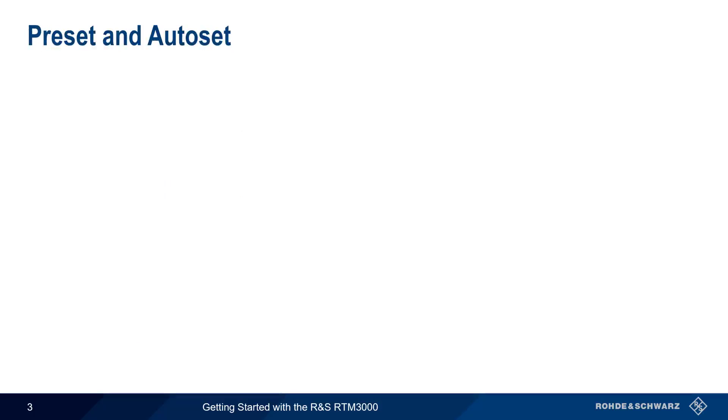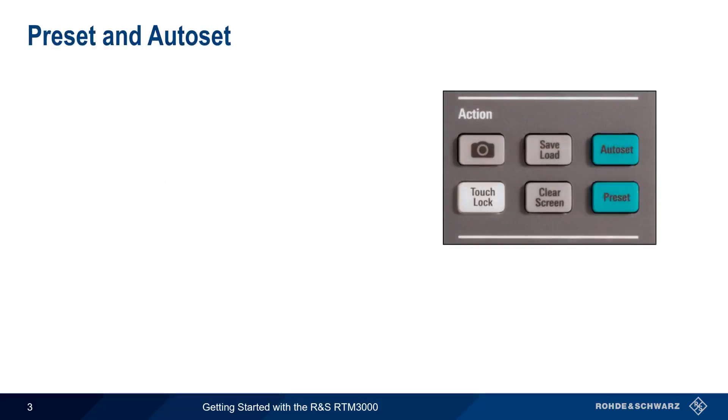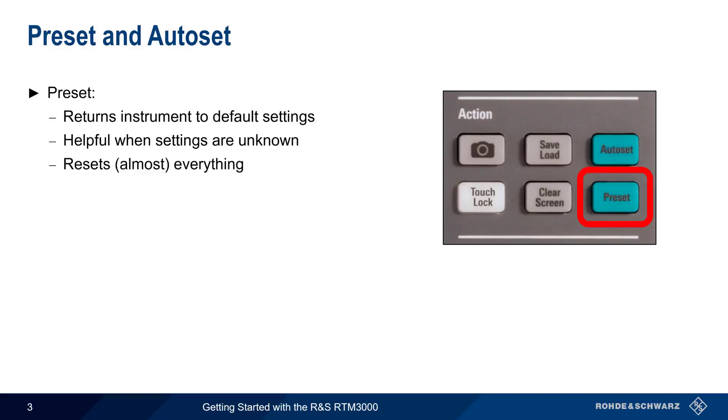Before we begin configuring our scope and making measurements, there are two very important front panel keys that you need to be familiar with: Preset and Autoset. Preset is used to return the scope to its default settings. This is very helpful if you're unsure about what the current settings are. Although Preset resets almost all the settings, it doesn't erase any data you've stored on the instrument.